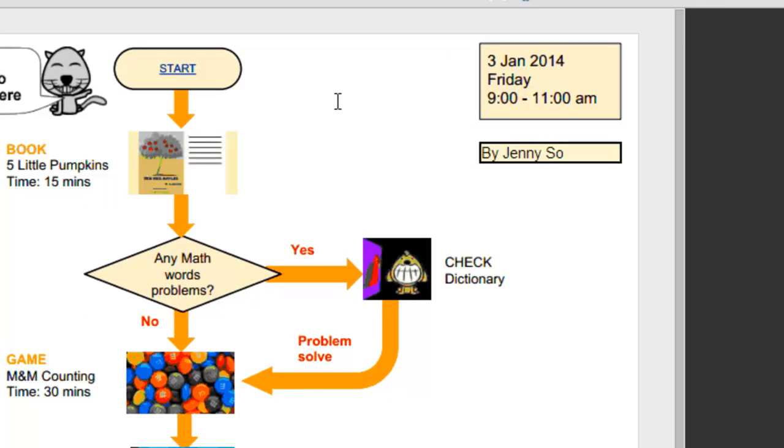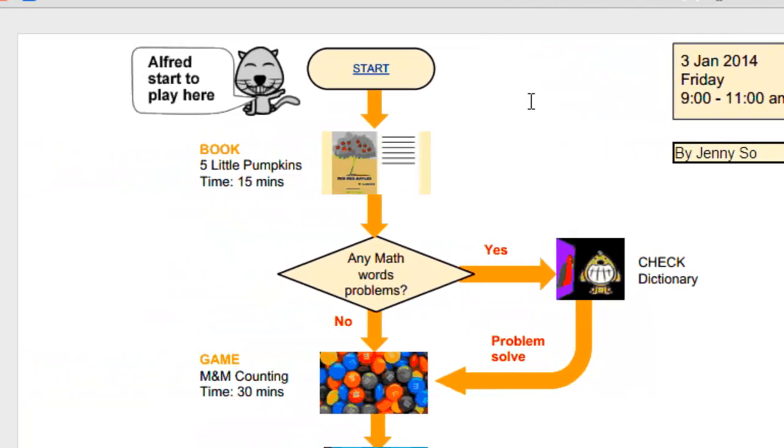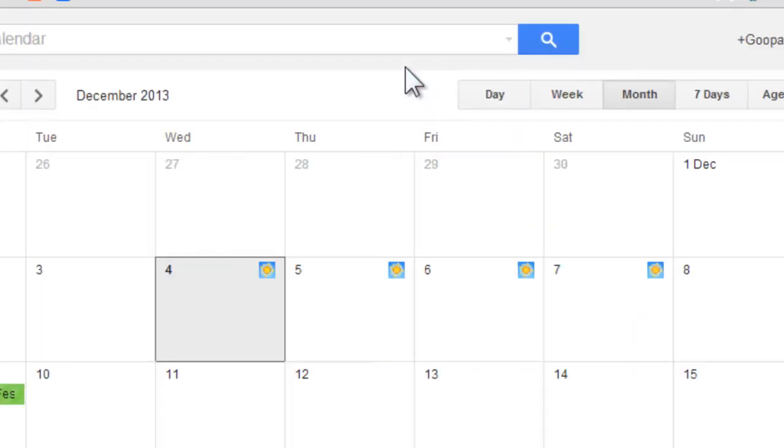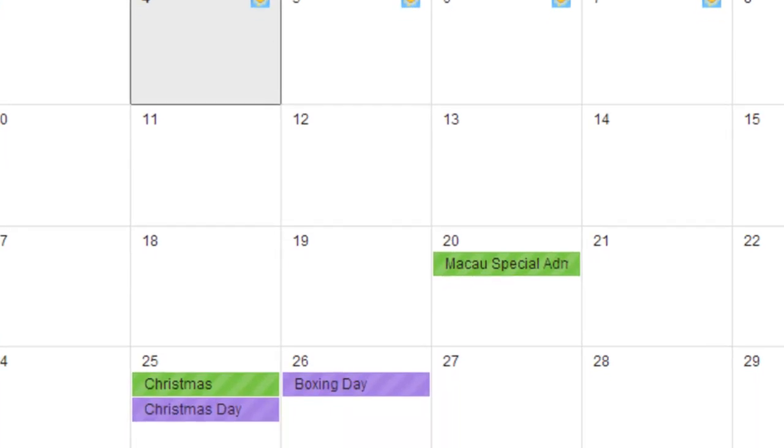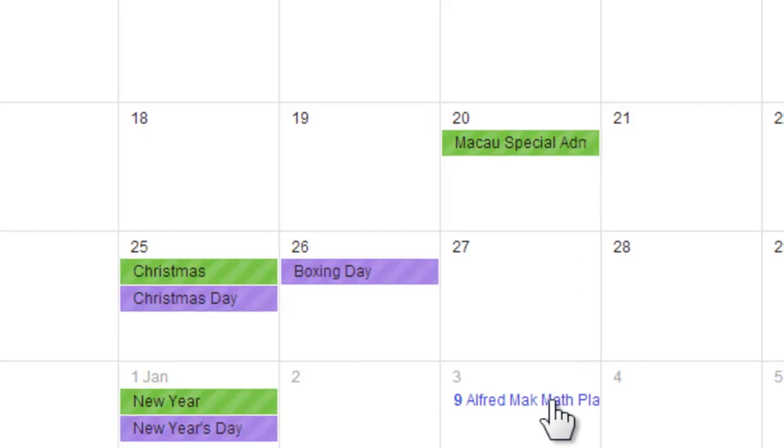Let us start. On the top of the chart, you will see a label written Start. If you click the Start, the link will bring you to a new tab page. This page is the Google Calendar. Let's find the date on the 3rd of January 2014. Here it is. So we double-click it.